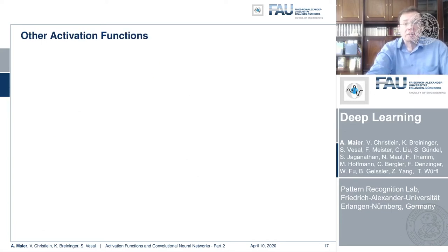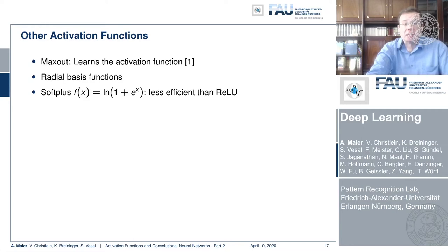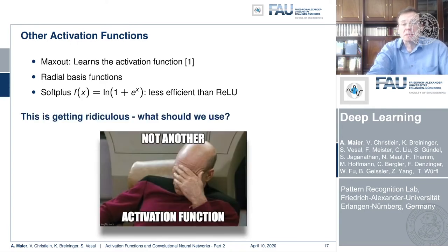Okay, what other activation functions? There is max out that learns the activation function. There is radio basis functions that can be employed. There is soft plus, which is a logarithm of one plus the e to the power of x. That was found to be less efficient than RELU. This is actually getting ridiculous, isn't it? So what should we use now?